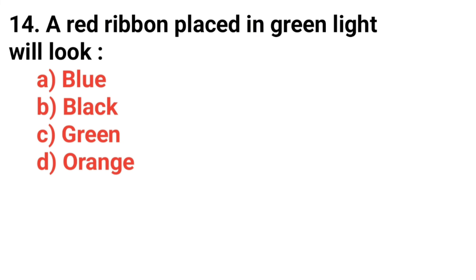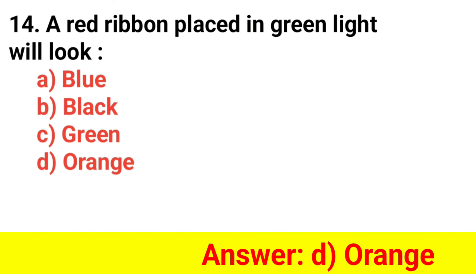Question 14. A red ribbon placed in green light will look? Answer option D — Orange.